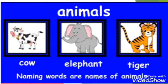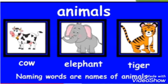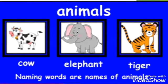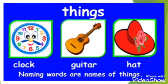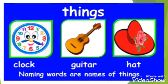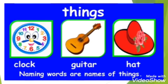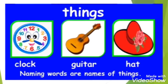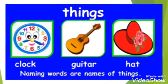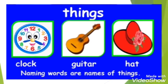Naming words are names of animals. In the same way, we see many things around us like clock, guitar, hat. So, naming words are names of things.